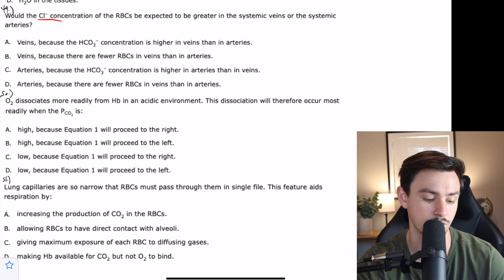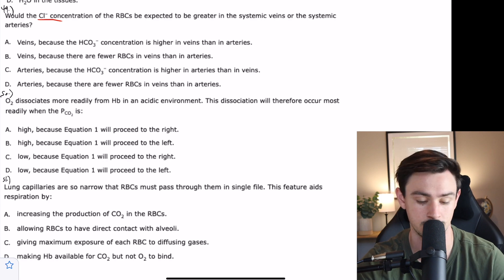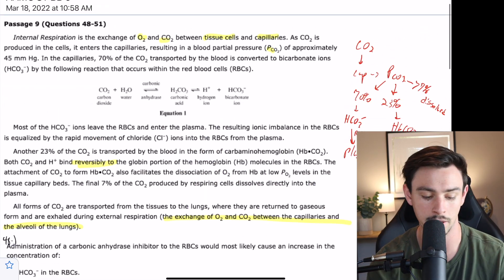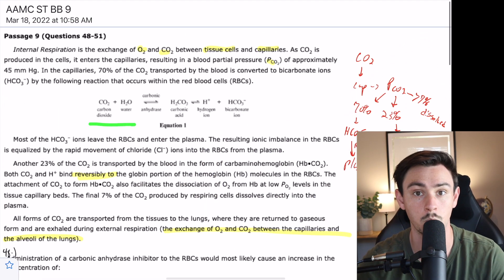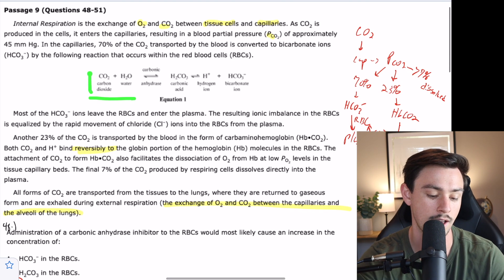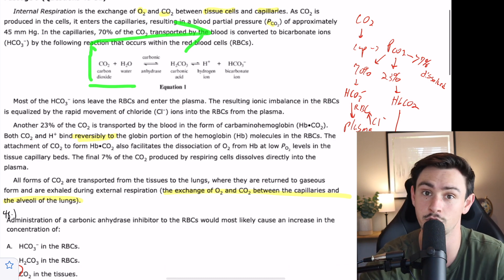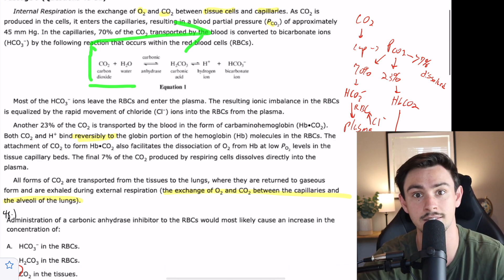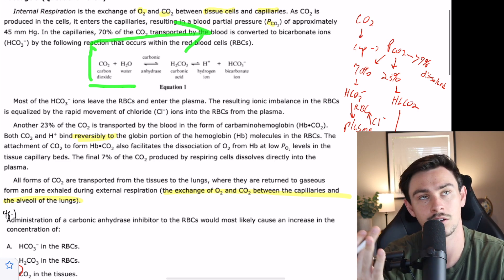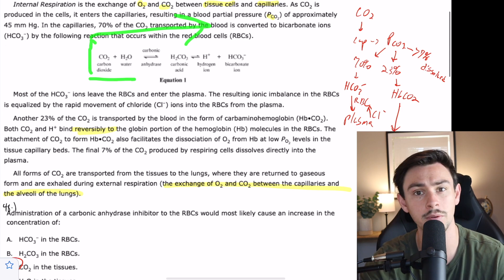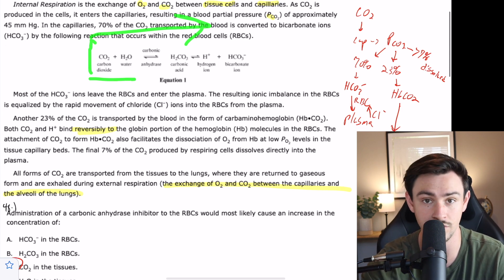Answer choice A says veins because the bicarb concentration is higher in veins than in arteries. Let's look at how bicarb is made. Bicarb is made by combining CO2 with water, so the more CO2 that you have, the more bicarb you're going to end up with. Would you expect there to be more CO2 in arteries or veins? Because arteries carry oxygen to your tissues and veins carry CO2 back to your lungs, you'd probably expect CO2 to be higher in value in the veins.